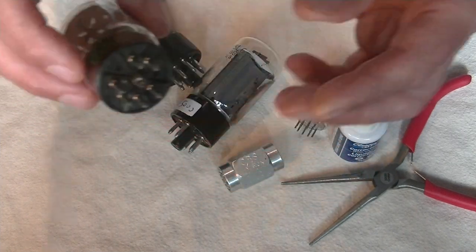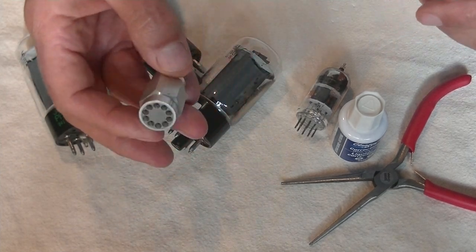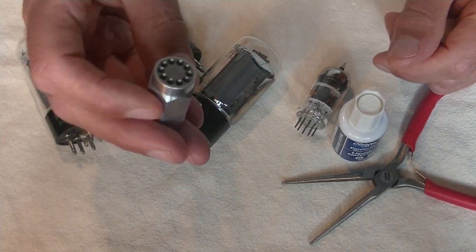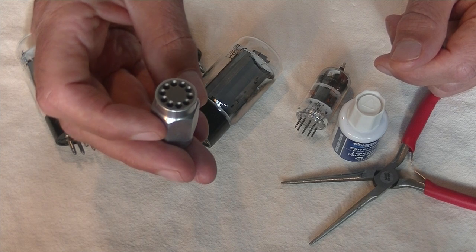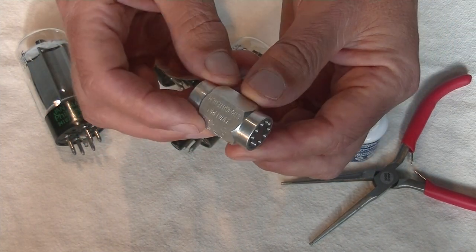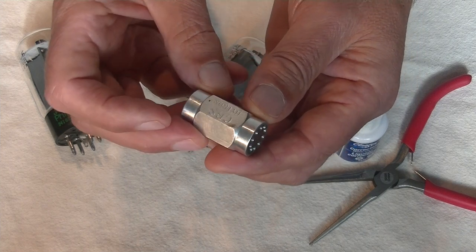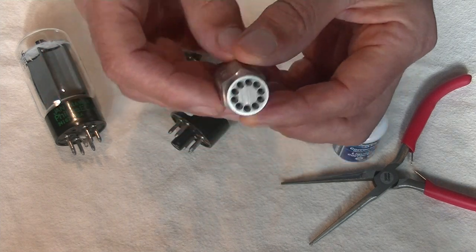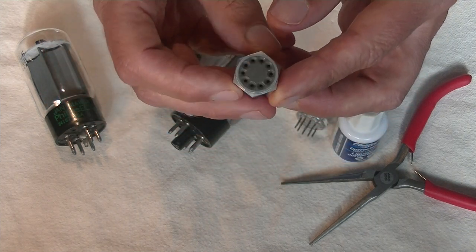Let's do something easy. Everyone who's into vacuum tubes in a serious way, especially vintage tubes, needs a pin straightener. This is a beautiful one from CBS Hytron and I don't know what I'd do without it.